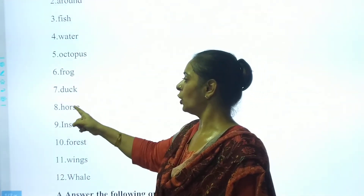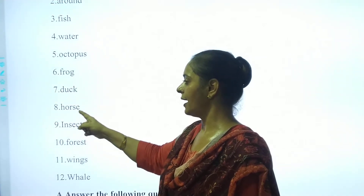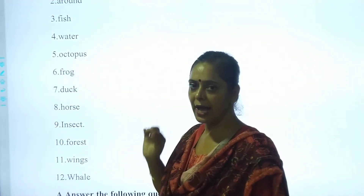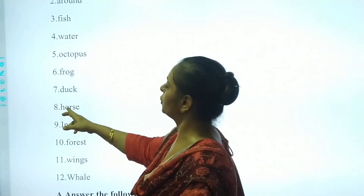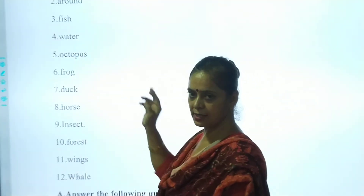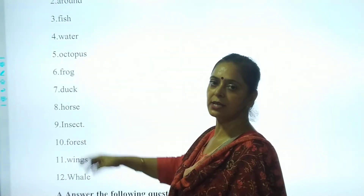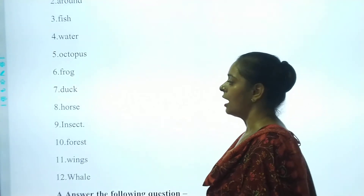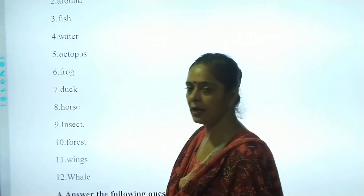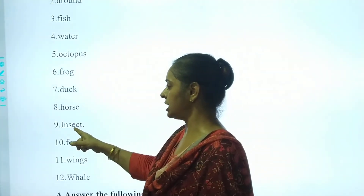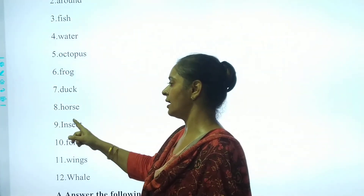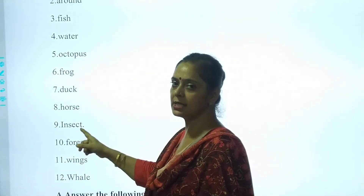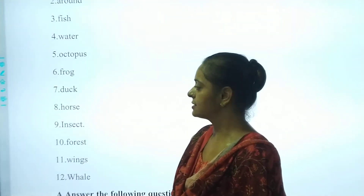It is Horse. H, O, R, S, E. H, O, R, S, E. It's called Horse. Ninth is Insect. I, N, S, E, C, T. I, N, S, E, C, T. Insect.